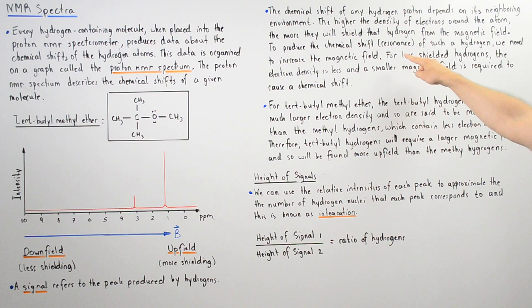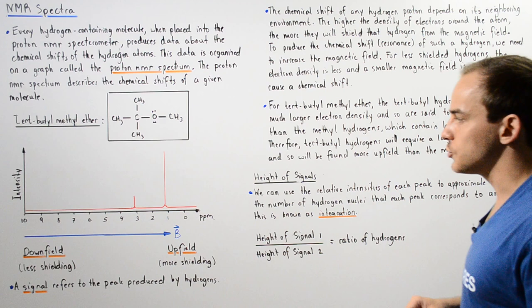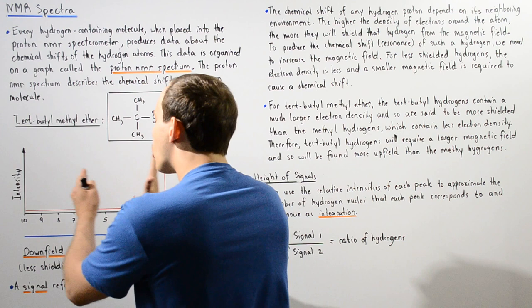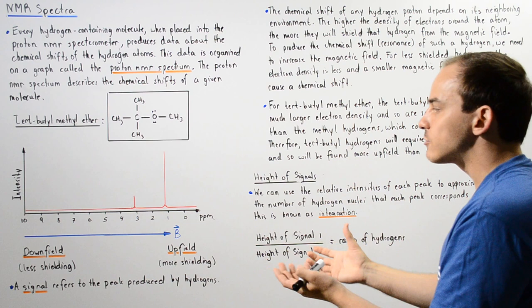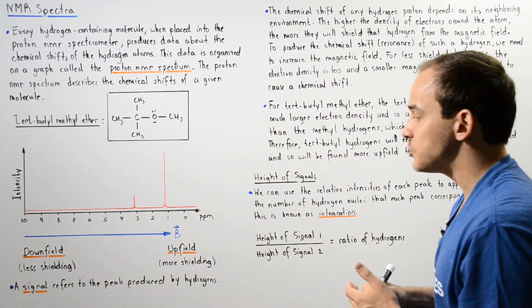To produce a chemical shift or resonance of a shielded hydrogen atom, we need to increase the magnetic field strength. For less shielded hydrogen atoms, the electron density is smaller, and a smaller magnetic field is required to produce that chemical shift. Signals found more downfield contain a smaller electron density, while signals found more upfield have more shielding — a higher electron density — and require a greater magnetic field to produce the chemical shift.